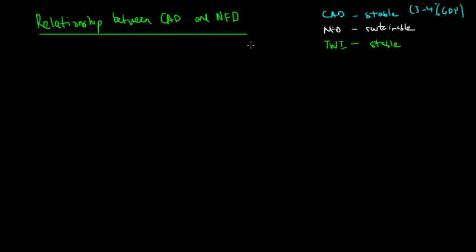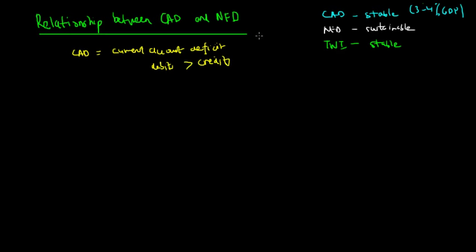Now let's look at the relationship between the CAD and the NFD. Before we go into the relationship, let's remind ourselves of the definitions. The CAD is the current account deficit — debits are greater than credits in the current account. The current account records the day-to-day transactions between residents and non-residents of the country, including the balance of goods and services, the balance on secondary income, and the balance on primary incomes.